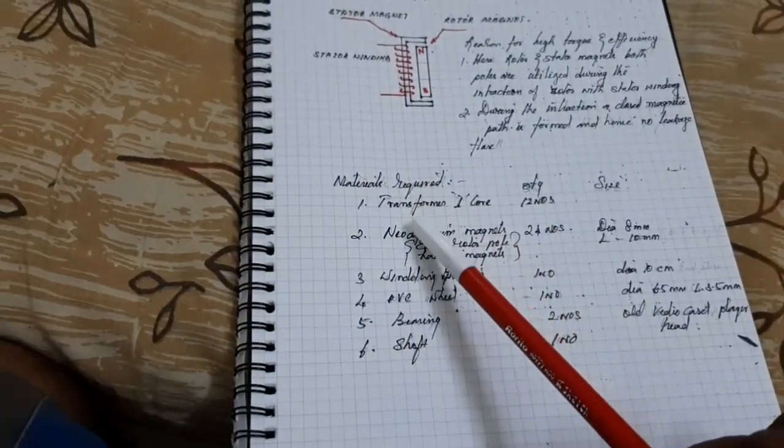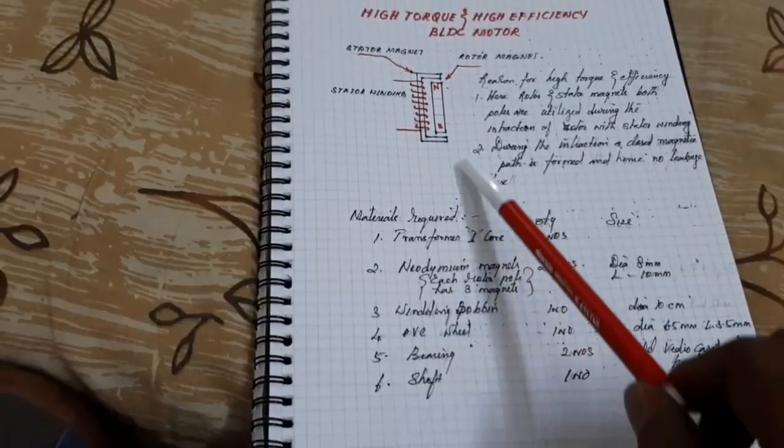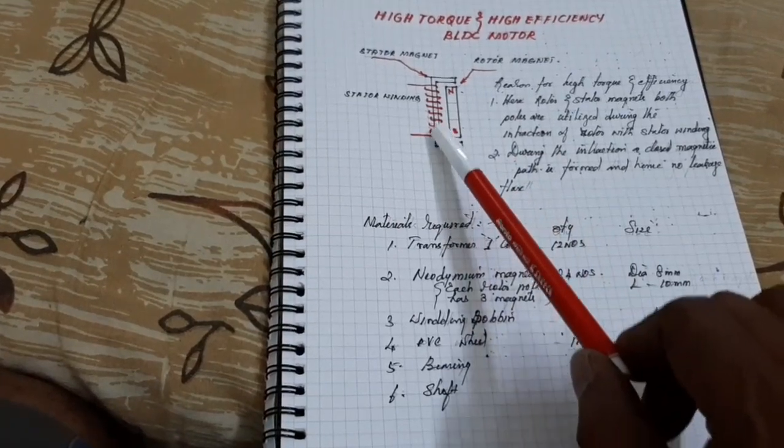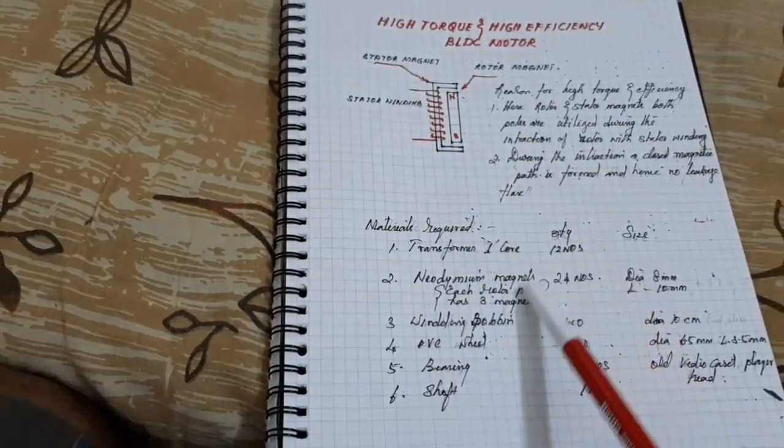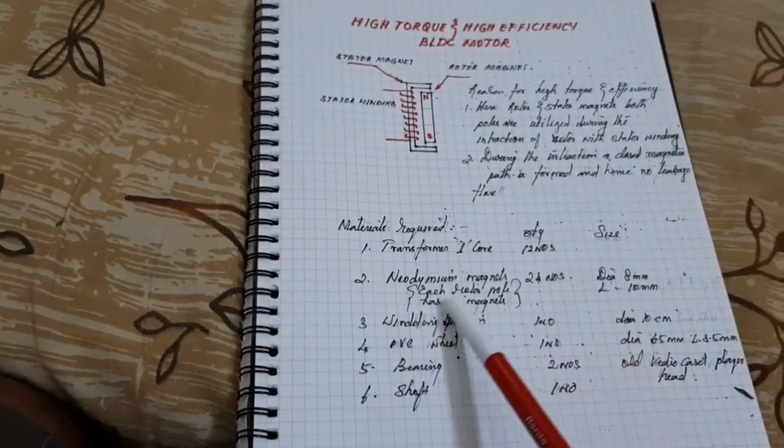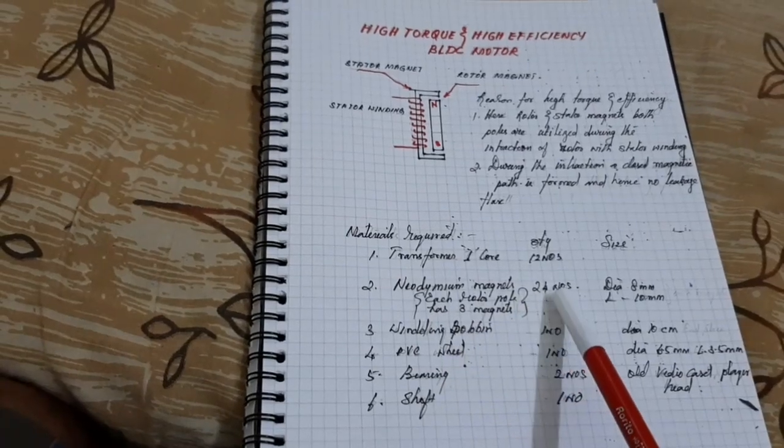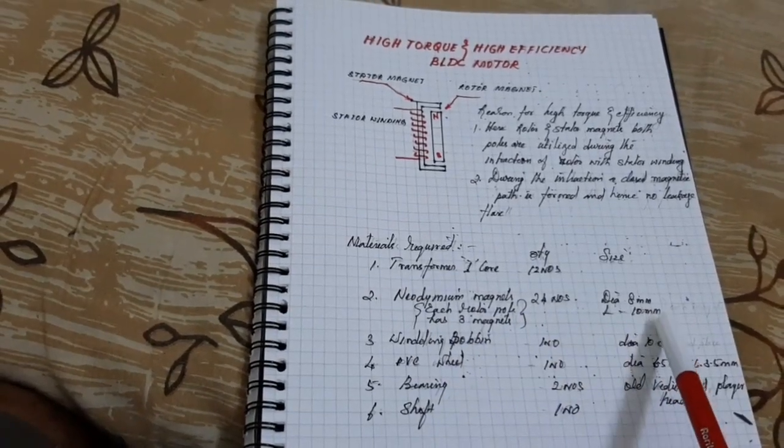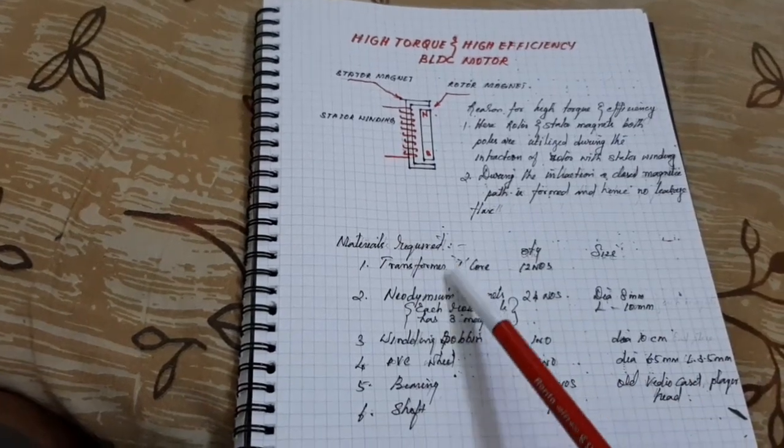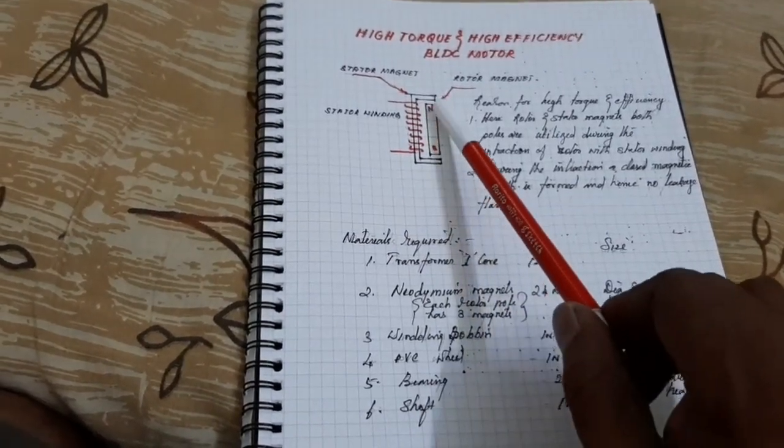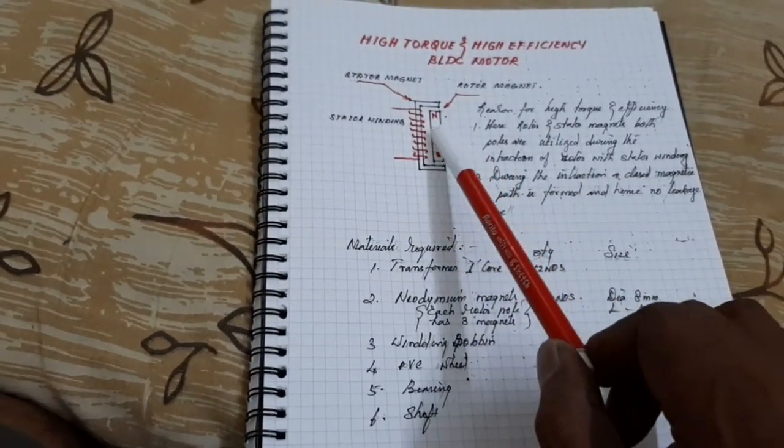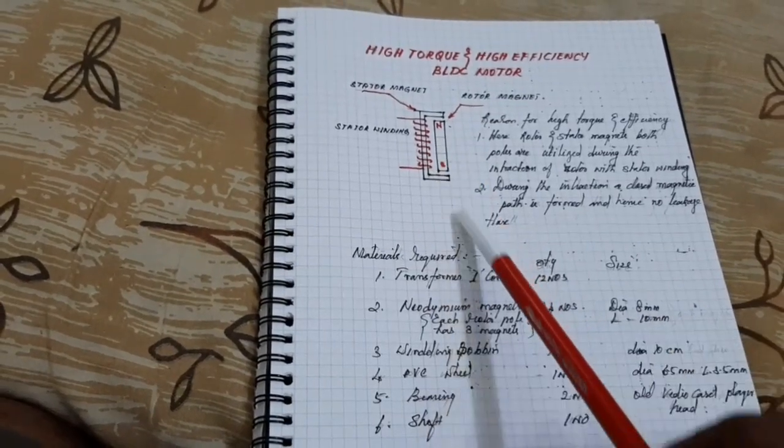Here, what are the materials required? Transformer I-Core. This is the transformer I-Core bent in U-shape. These are 24 numbers neodymium magnets, diameter 8 mm and length 10 mm. Each pole has three magnets. This is one pole and three magnets are attached here.